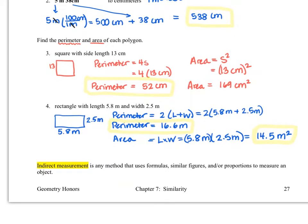Moving on to the bottom of the page, indirect measurement is any method that uses formulas, similar figures, and/or proportions to measure an object — meaning you're not going around with a measuring tape.